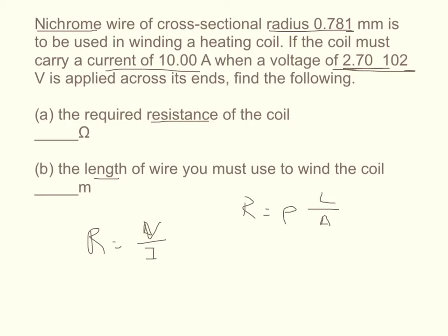So let's go ahead and find the resistance. The voltage is 270, and the current is 10. So our resistance should be 27. So R equals 27. We figured out what R is now.